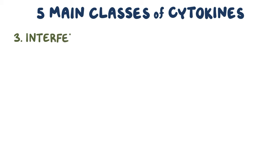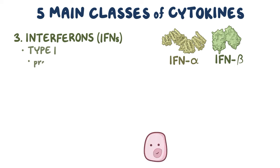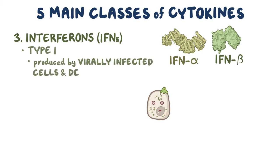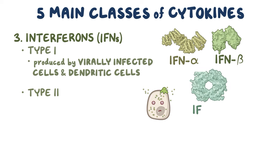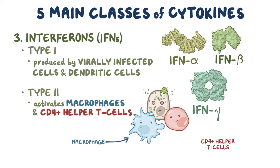The third group are the interferons, and as their name implies, they interfere with processes like viral replication. There are two types of interferons, type 1 and type 2. Type 1 interferons include interferon alpha and interferon beta, and they're usually produced by virally infected cells and some dendritic cells responding to the viral infection, in order to limit viral replication. The only type 2 interferon is interferon gamma. This molecule is the most powerful macrophage activator, and it also activates CD4-positive helper T cells, which then secrete their own interferon gamma and interleukin-2.